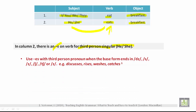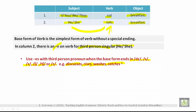Use ES with a third person pronoun when the base form ends in certain endings. Please notice what I'm highlighting. The base form of the verb is the simplest form without a special ending. If it ends in SS, X, or CH, you want to add ES. For example: discuss ends in SS, rinse ends in SE, washes ends in SH, catches ends in CH. Other examples could include X.